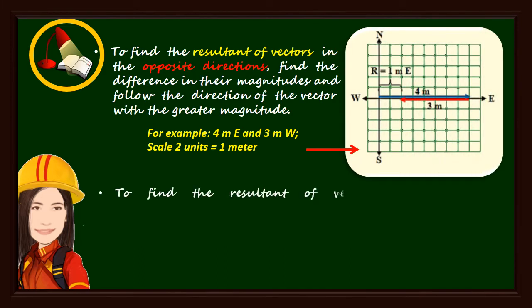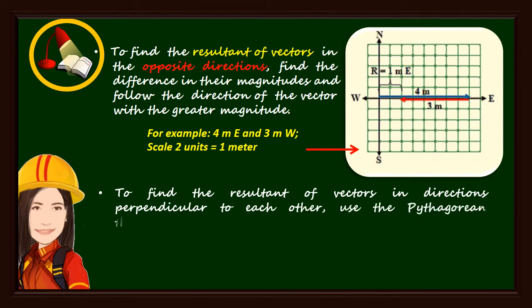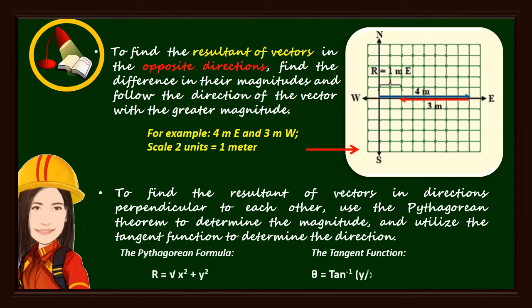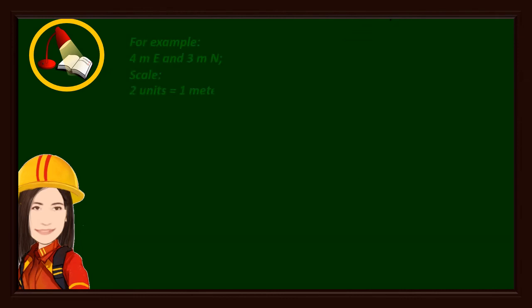To find the resultant of vectors in directions perpendicular to each other, use the Pythagorean theorem to determine the magnitude, and utilize the tangent function to determine the direction. To further understand how, study the given example.